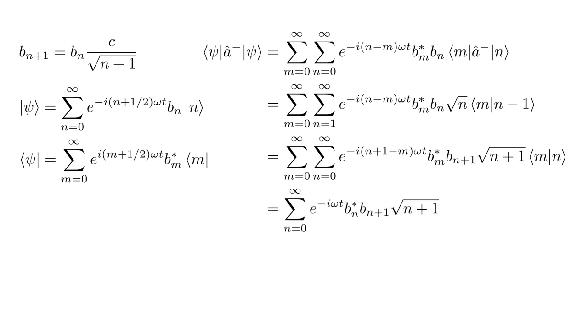Replacing m by n and dropping the m summation, we get the sum over n, e to the minus iω t, times c magnitude squared times b_n. Since sum of magnitude squared b_n equals one, this gives us, for the expectation value of the destruction operator, c times e to the minus iω t. A very similar analysis shows that the expectation value of the creation operator is the conjugate of this, c conjugate times e to the iω t.